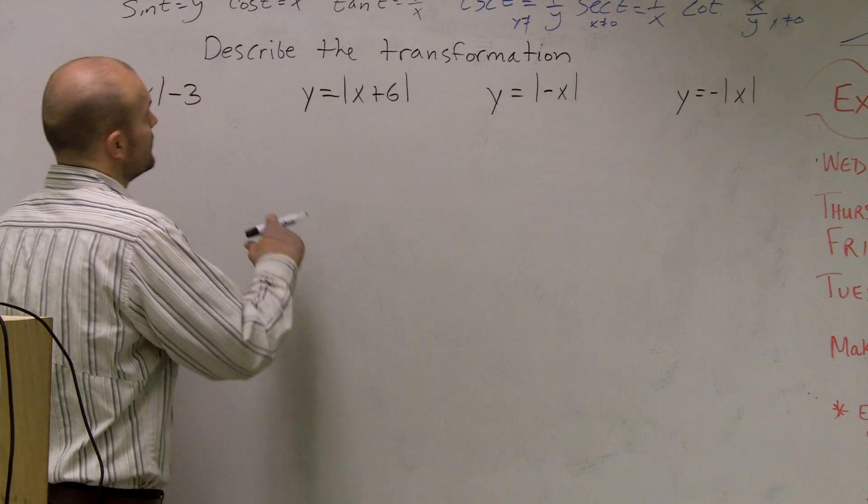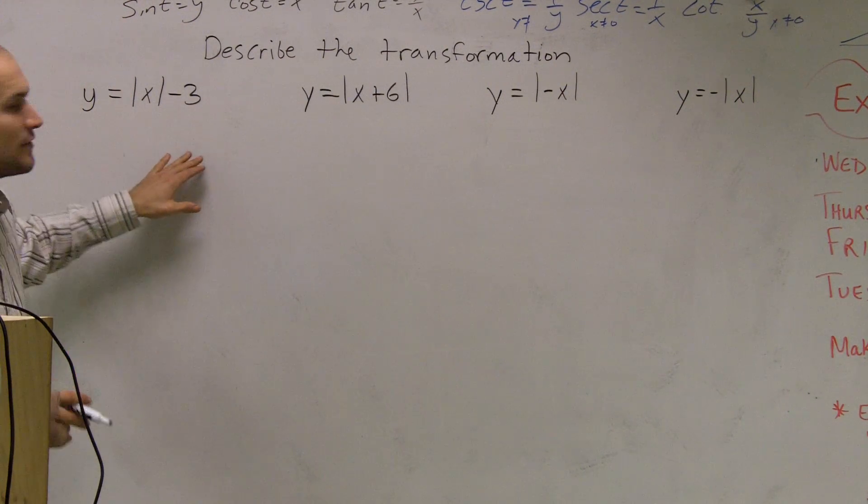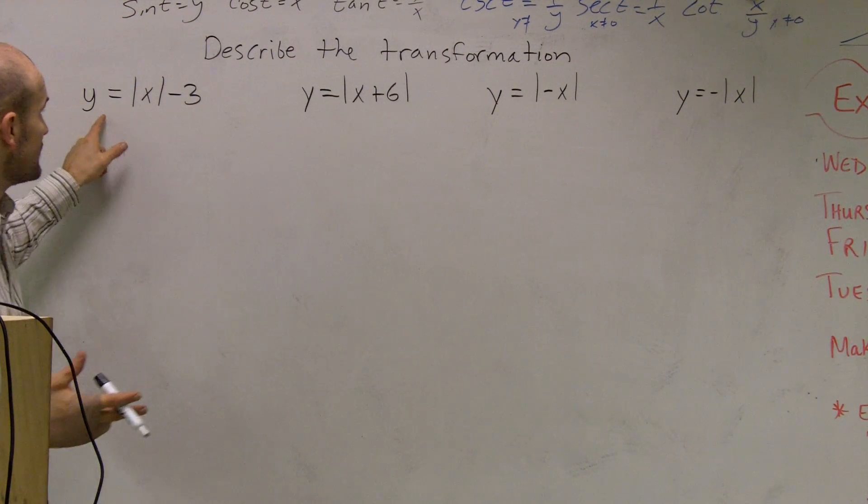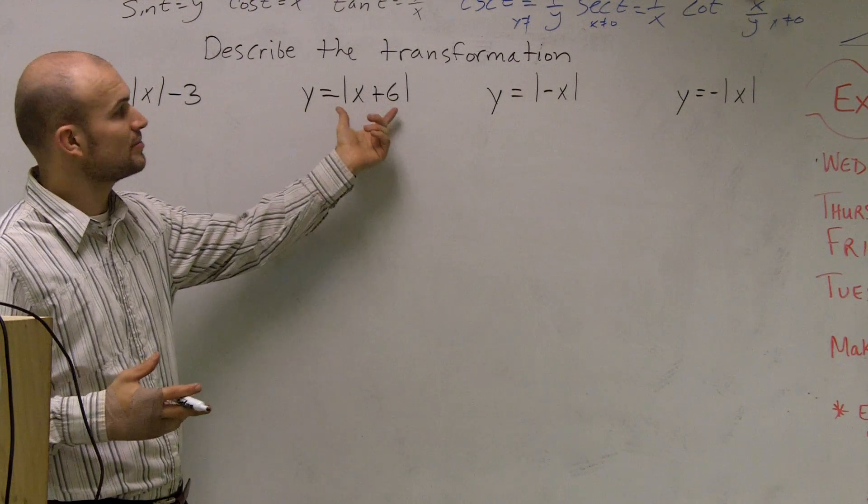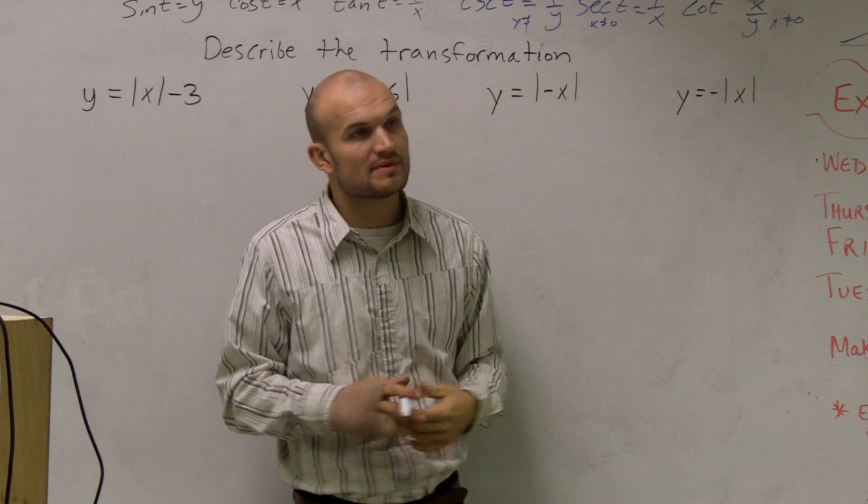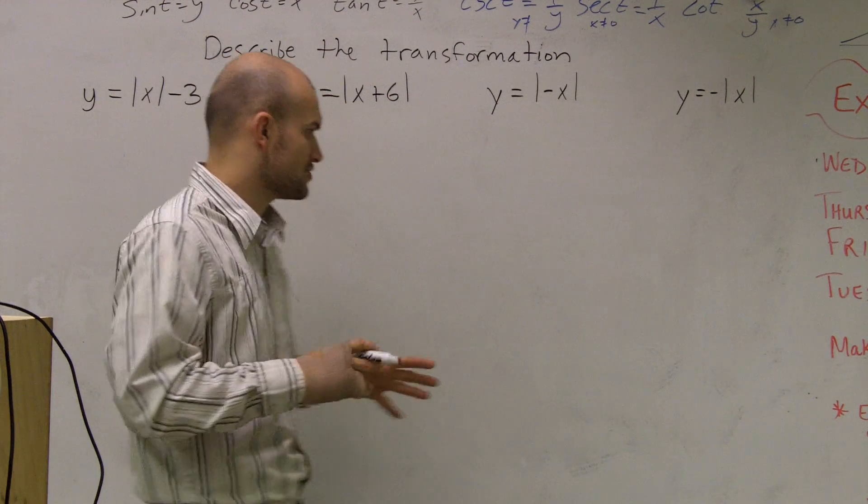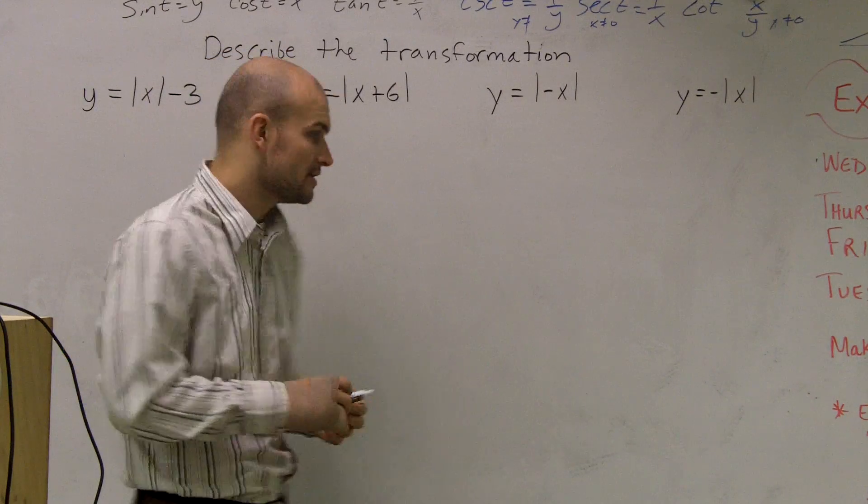What I want to do is show you how to find and describe the transformation. We have four different graphs for the absolute value function. We have y equals the absolute value of x minus 3, y equals the absolute value of x plus 6, y equals the absolute value of negative x, and y equals the absolute value of x. So what I want to do is show you how each of these transformations are going to affect your graph.